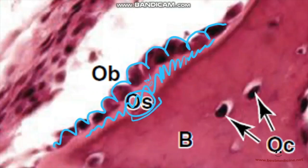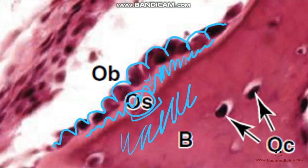That woven bone is then ossified and mineralized by matrix vesicles containing phosphate ions and calcium pulled in by osteocalcin in a vitamin K dependent manner, forming the hard mineralized bone which contains the hydroxyapatite crystals.